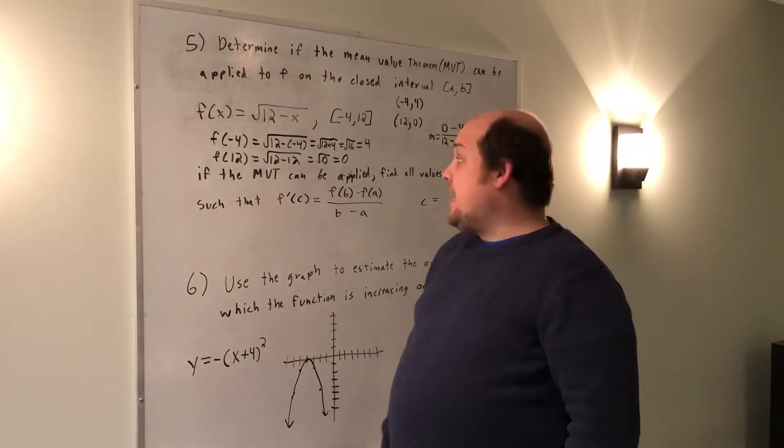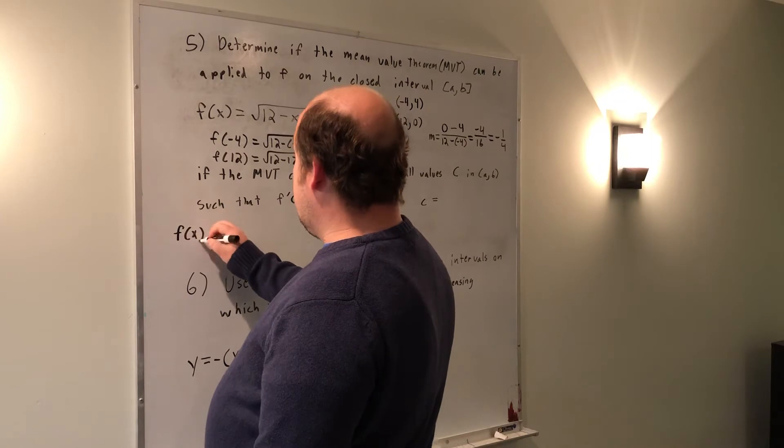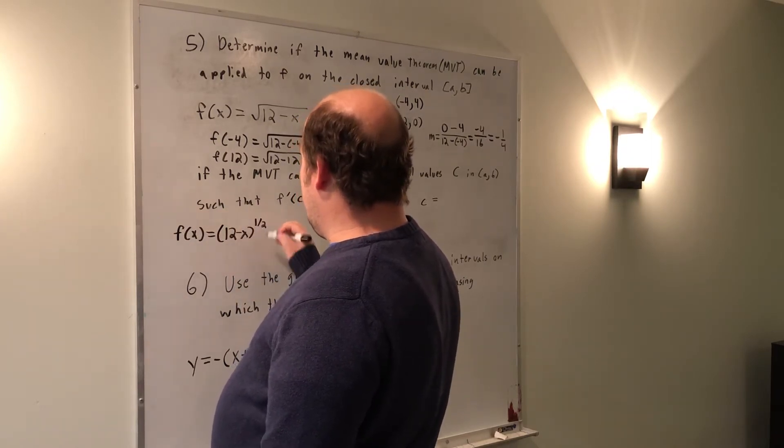My next step is to take the derivative. So f of x can really be rewritten as f of x equals 12 minus x to the power of 1 half.